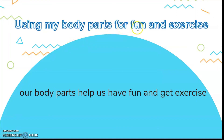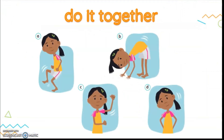Now let's move to using our body parts for fun and exercise! Our body parts help us have fun and get exercise. I want all of you to stand up and do this activity together. Let's have fun! Move your hands, then move your feet. Next, shake your arms and shoulders like dancing. Then shake your hands — go to the right, go to the left. Repeat until you feel tired!